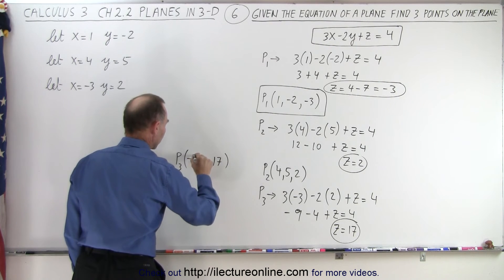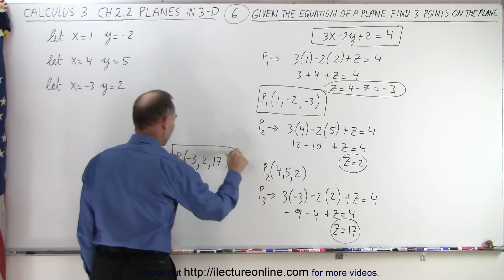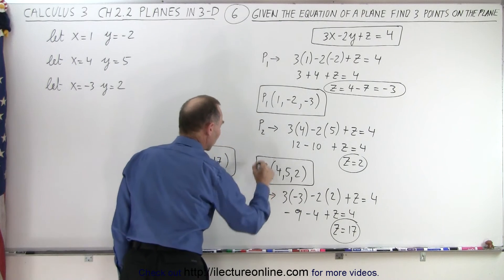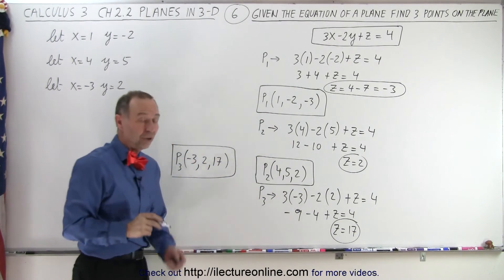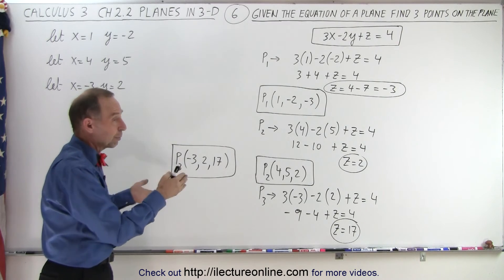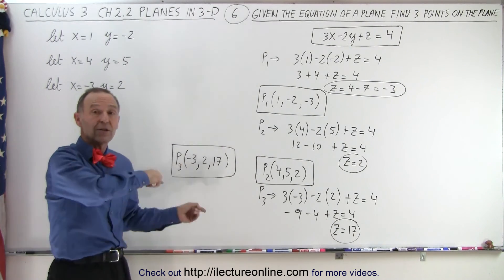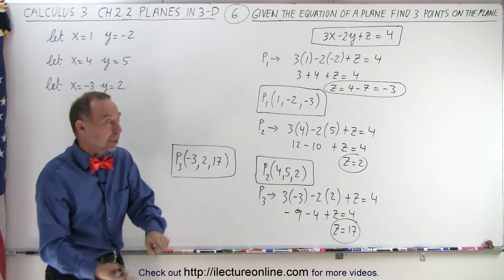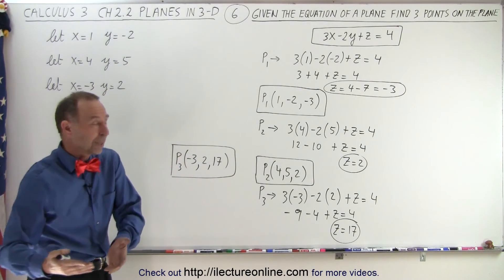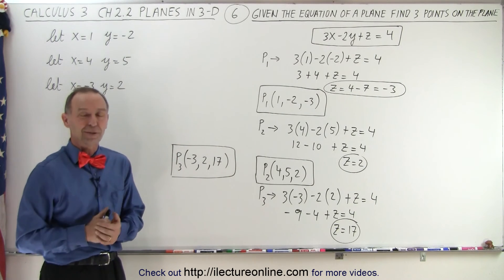Now we have all 3 points: point 3, point 2, and point 1. If these are correct, what we can then do is take those 3 points — we're going to do that in the next video — and turn them back into an equation to see if we can go back and forth. From an equation we can get 3 points; from 3 points we get back the equation of a plane. And that is how it's done.